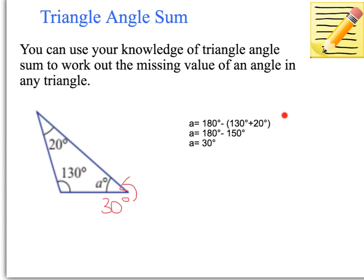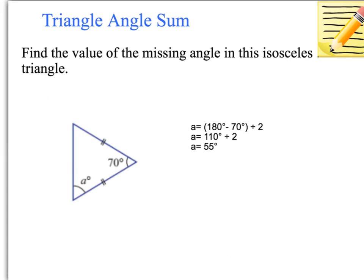Please make sure you write down your working out so that you can refer to it later. Now, when we're finding the value of the missing angle in this triangle, it's an isosceles triangle, so it has two sides that are the same, and therefore two angles will be the same. So we need to use our knowledge of triangle angle sum, meaning all angles add to 180 degrees. We take away 70 from 180, which leaves us with the total of these two equal angles. Since we know they're equal, we divide by 2. So 180 minus 70 equals 110, divided by 2 equals 55 degrees. Each of these angles is 55 degrees.